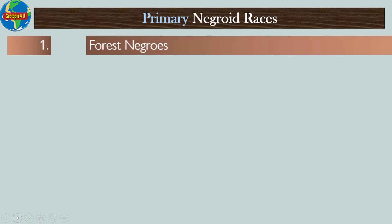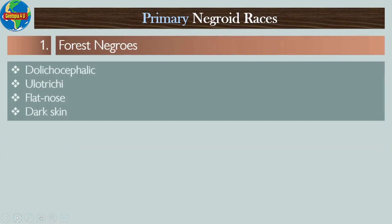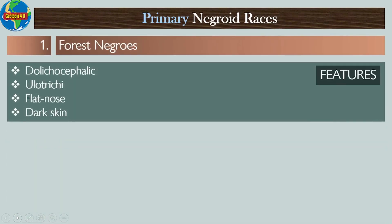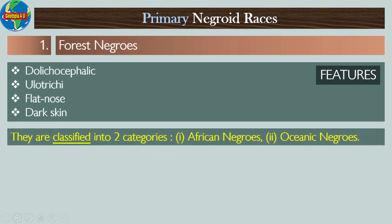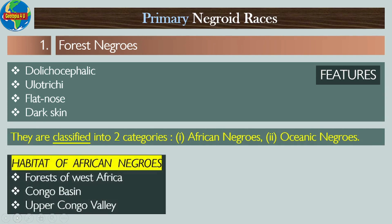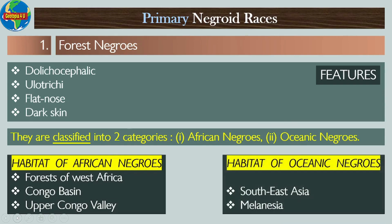Primary Negroid races — Number one: Forest Negros. The features of forest negros are: they are dolichocephalic, they have ulotrichous hair, a flat nose, and dark skin. Forest negros are classified into two categories: African negros and Oceanic negros. The habitat of African negros includes the forests of West Africa, Congo Basin, Upper Congo Valley, Southeast Asia, and Melanesia.